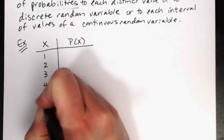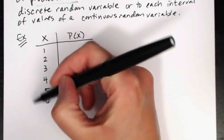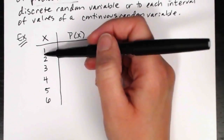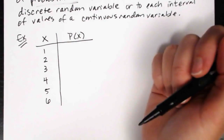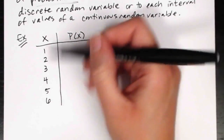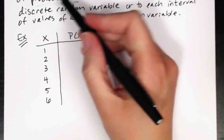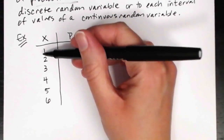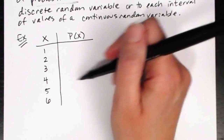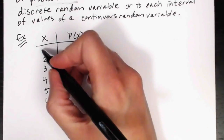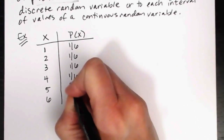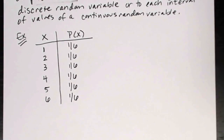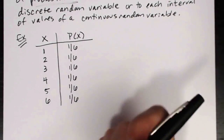For example, if we roll a six-sided die and create the probability distribution, all possible outcomes are the numbers one through six — listed under the X column. In the P(X) column, the probability of rolling any one value is one-sixth. So each outcome gets a probability of one-sixth.